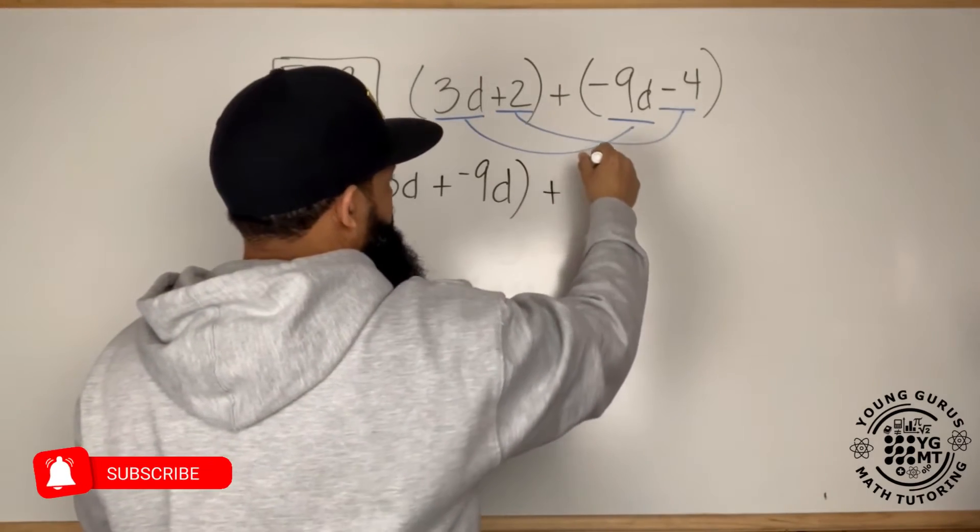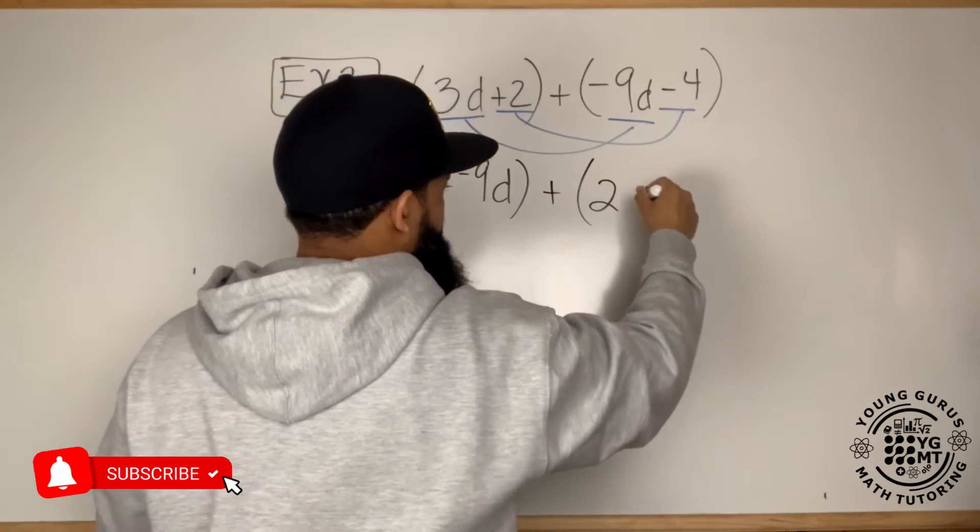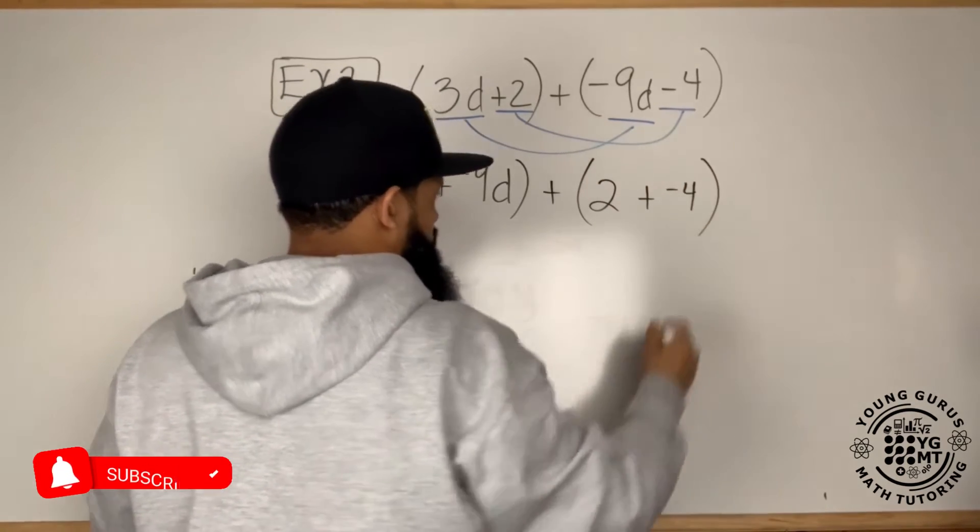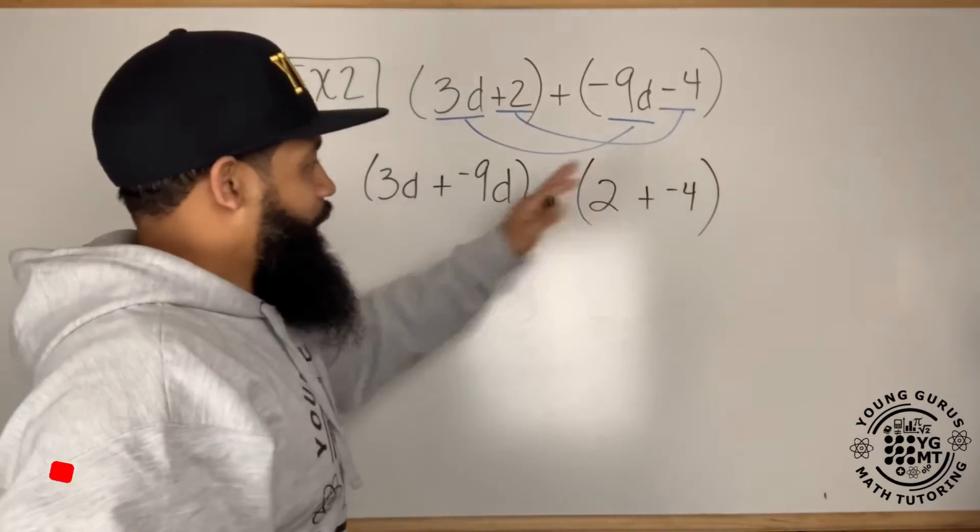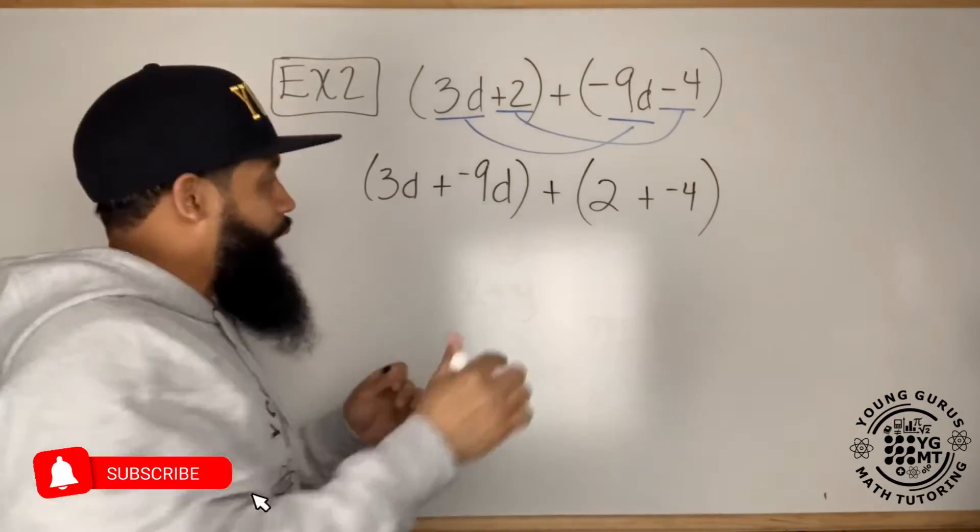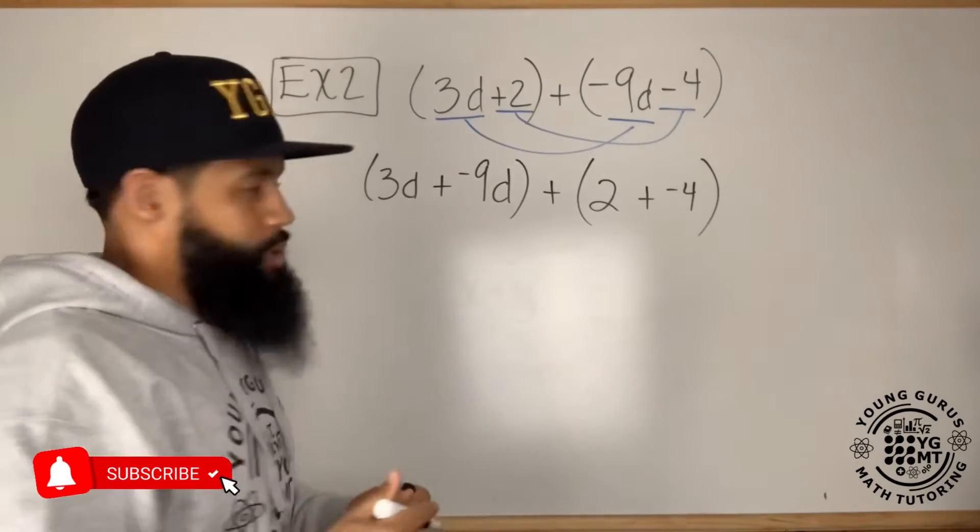So then I'm going to put that plus sign there, and I'm going to say 2 plus negative 4. And I'm going to explain to you why I can write this multiple ways.